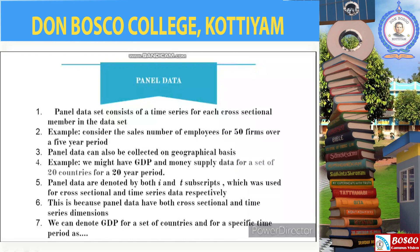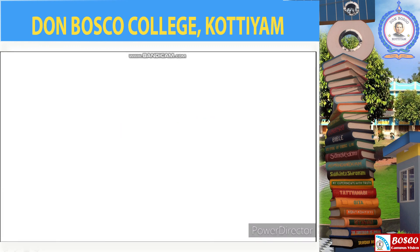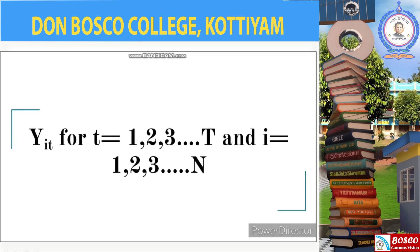Panel data are denoted by the use of both i and t subscripts, which we have used before for cross-sectional and time series data respectively. This is simply because panel data have both cross-sectional and time series dimensions. So we might denote GDP for a set of countries over a specific time period as y_{it}, where small t equals 1, 2, 3, up to T and i equals 1, 2, 3, up to N. So these are the structures of economic data.